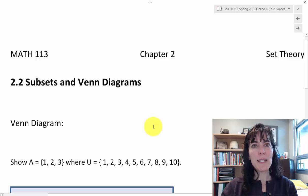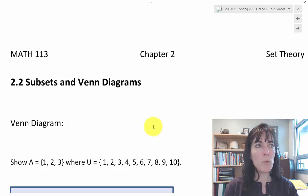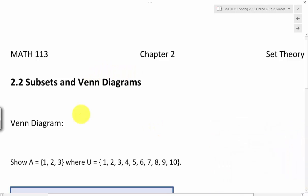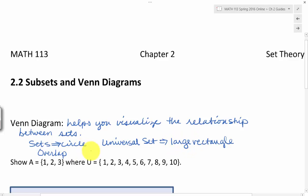2.2, subsets and Venn diagrams. A Venn diagram — I showed you one on the very first lesson in 2.1. A Venn diagram helps you visualize the relationship between sets. For a set, you will show it as a circle, and the universal set will be that large rectangle. And if there's an overlap in the circles, that means that there are elements in common.